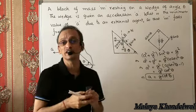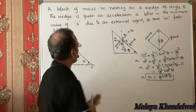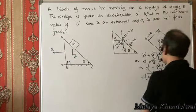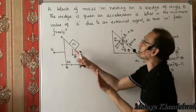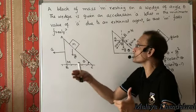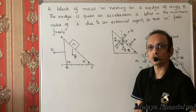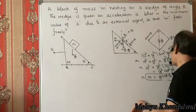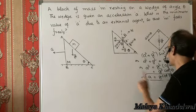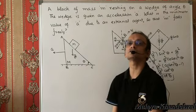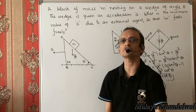If a is larger than g·cotθ, the block will still fall freely — the greater the value of a, the greater the prospect that m falls vertically downwards. So the minimum value of a for which the block falls vertically downwards is g·cotθ. For any value of a larger than g·cotθ, it will certainly fall freely under gravity.